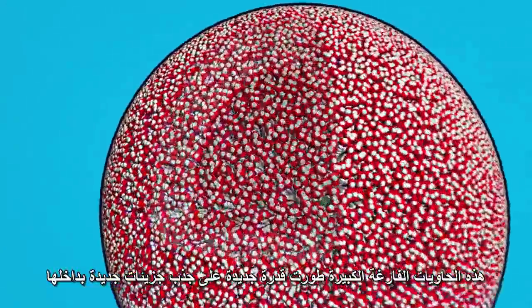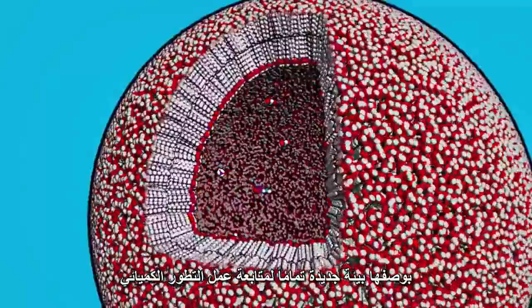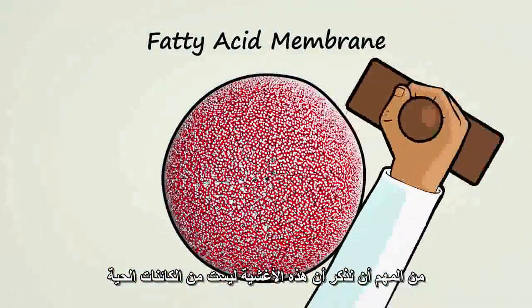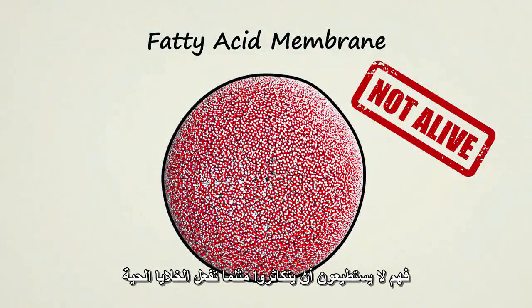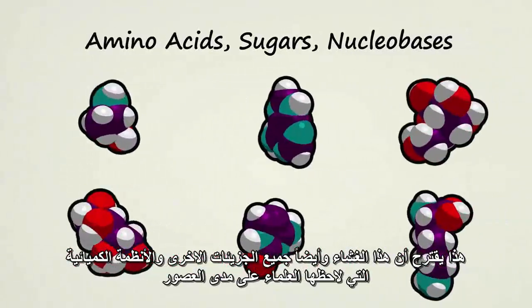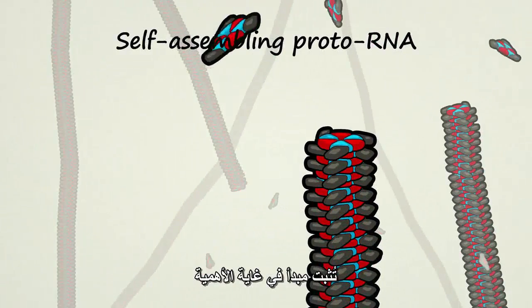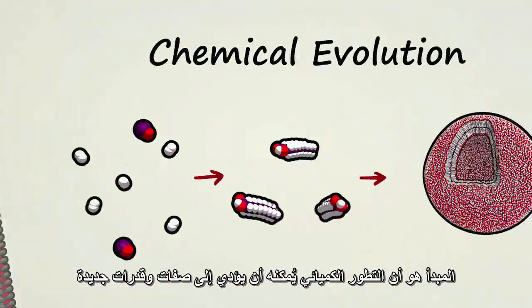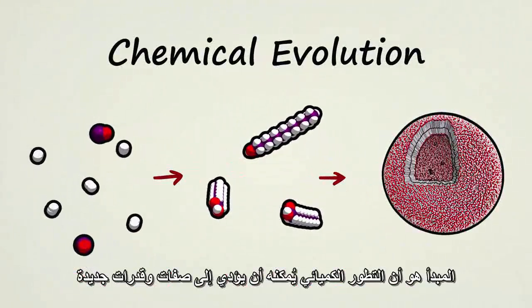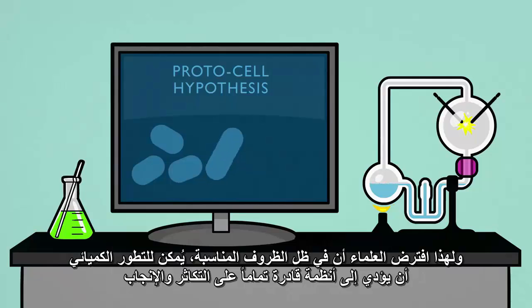These containers have a brand new ability: they can trap other molecules inside, acting as an entirely new environment for chemical evolution to continue working within. It's important to note that these membranes do not qualify as living creatures — they can't reproduce on their own the same way living cells do. That said, the development of these membranes, along with many other molecules and chemical systems that scientists have observed, demonstrate an extremely important principle: chemical evolution can give rise to new characteristics and abilities. Because of this, scientists hypothesize that under the right circumstances, chemical evolution could give rise to systems that are fully capable of reproduction.